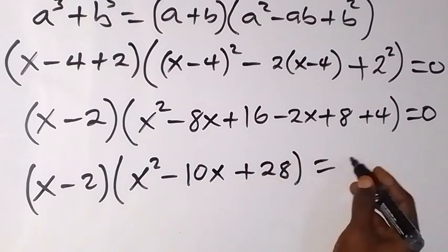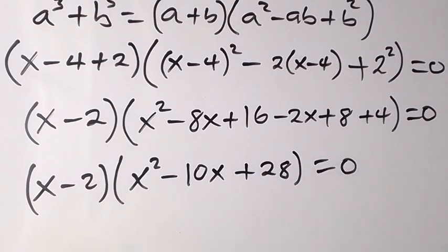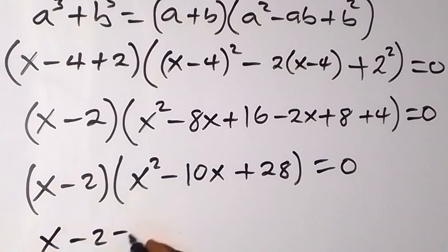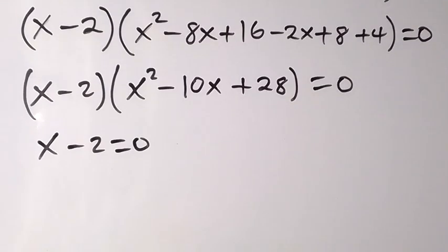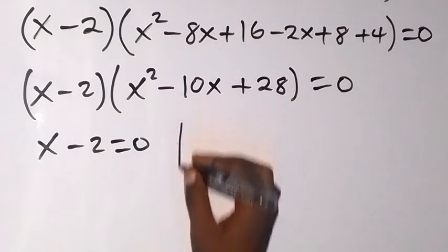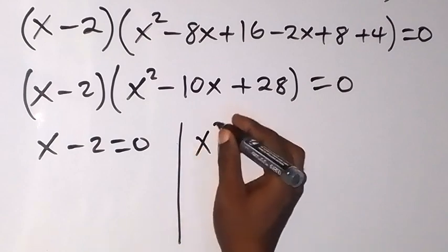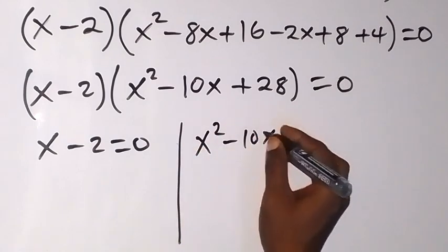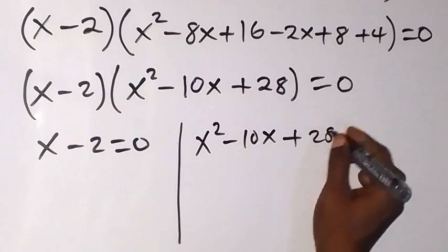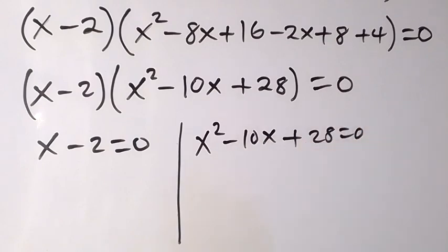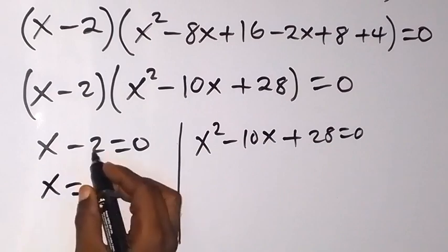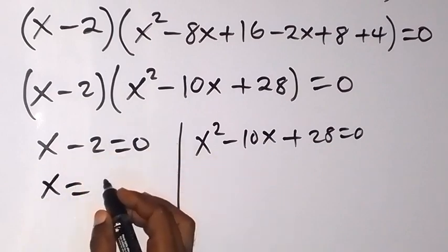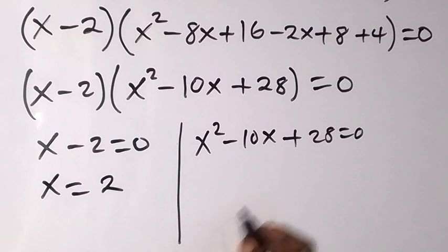We now have two cases: x minus 2 equals zero, and x squared minus 10x plus 28 equals zero. From the first case, x equals 2.